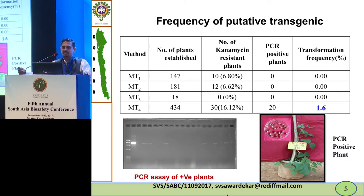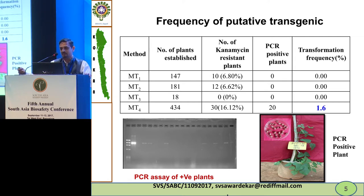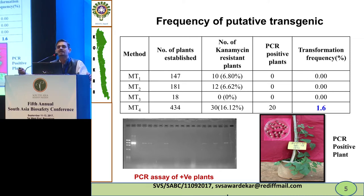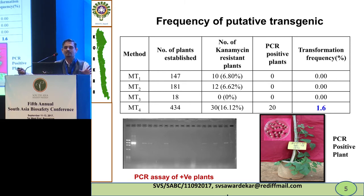The maximum transformation frequency was observed in the MT4 method, which was the only successful method, recording a 1.6% transformation frequency. We confirmed results by PCR and RT-PCR, and observed that whole plants were generated, producing seeds and pods.